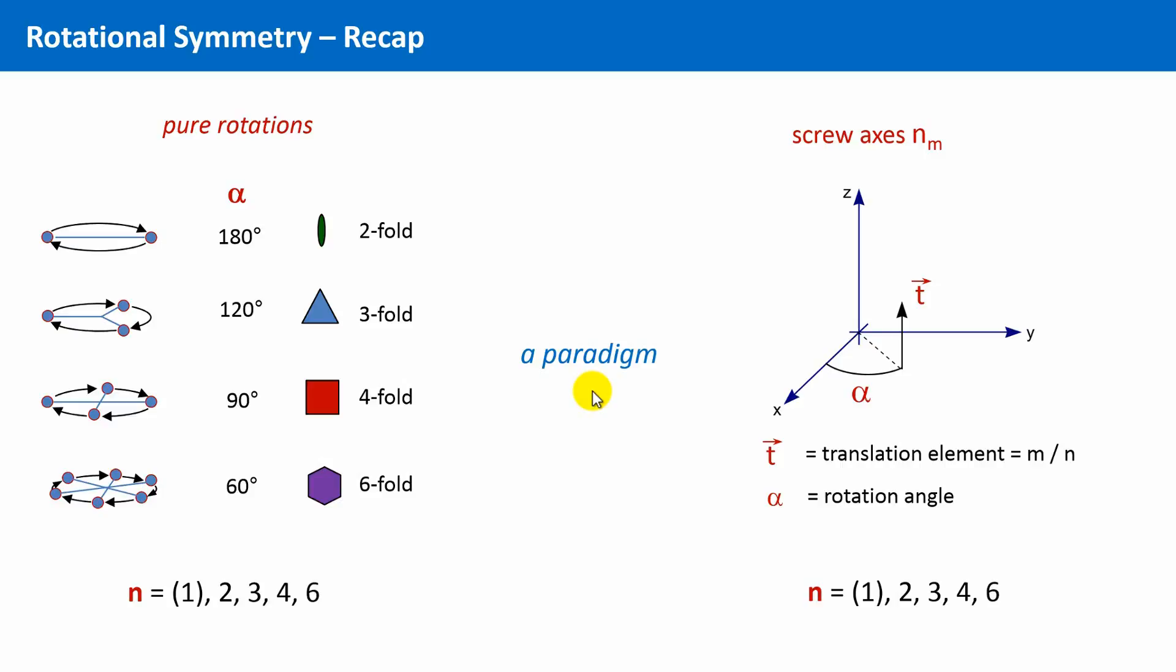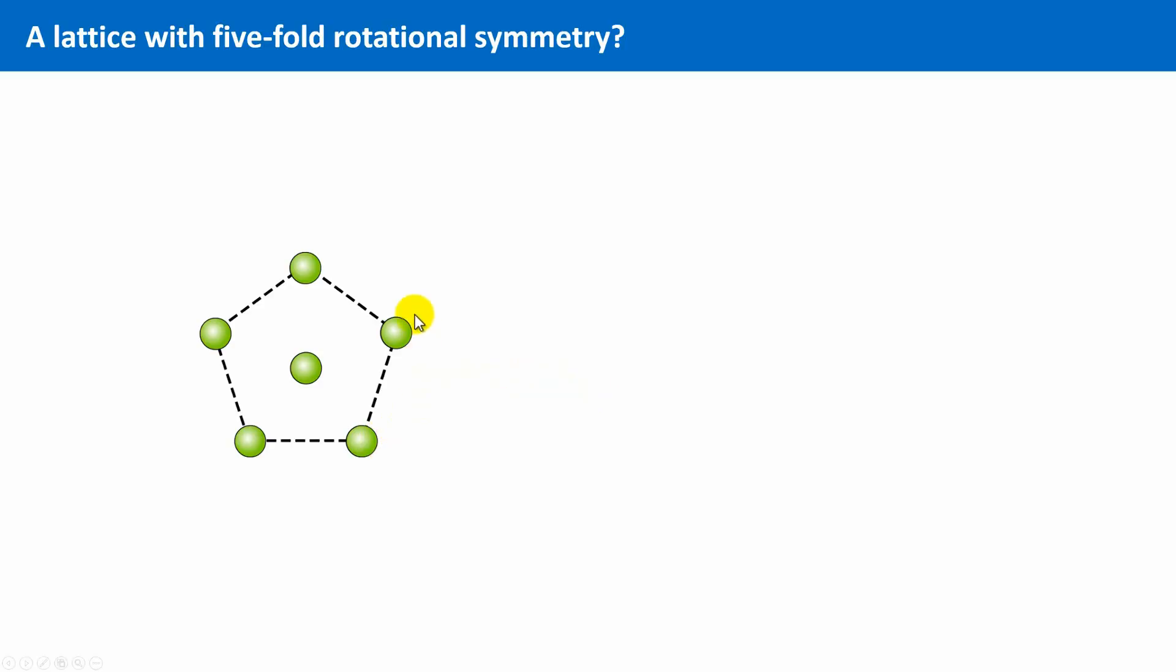Let's check if this is true. We can try to build a lattice with 5-fold rotational symmetry. Here we see something like a centered cell of a 2-dimensional lattice with 5-fold rotational symmetry. This means the green spheres should represent lattice points. We can draw the lattice vectors, pointing from one lattice point to the next one, in the a and in the b direction. So now we can translate this lattice along these vectors, and should then find a congruent pattern.